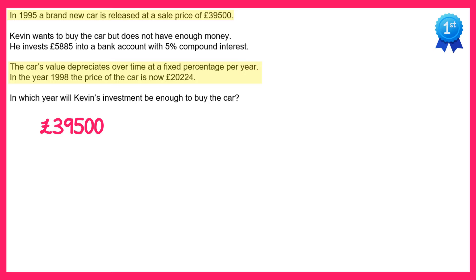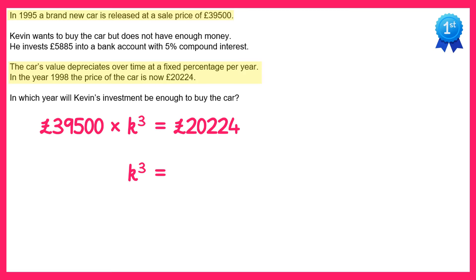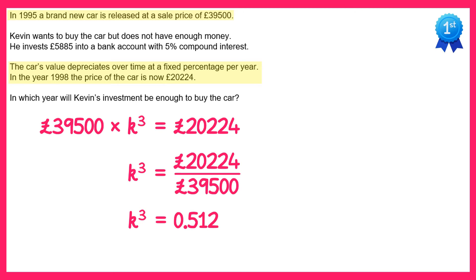I'm going to call this fixed rate K since we don't know what it is, and if we're going to multiply it by K three times, that's the same as multiplying by K cubed. So if we do this times K cubed we'd end up with £20,224. We can now solve this to find the value of K — dividing both sides by £39,500, we get K cubed equals 0.512.